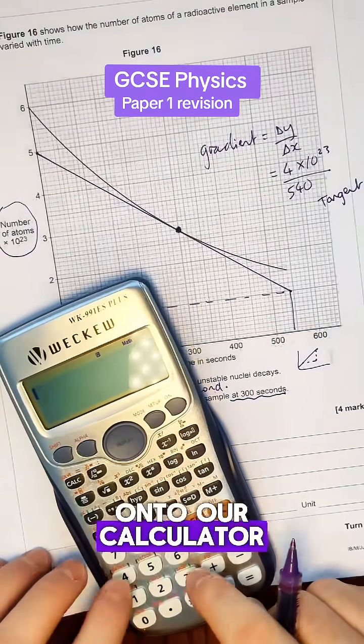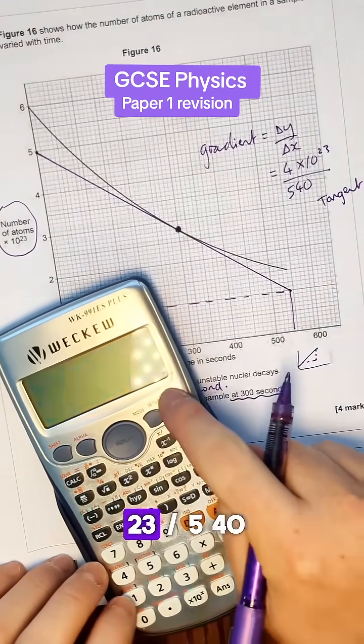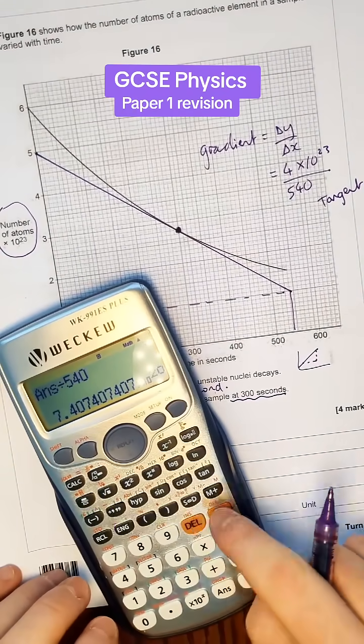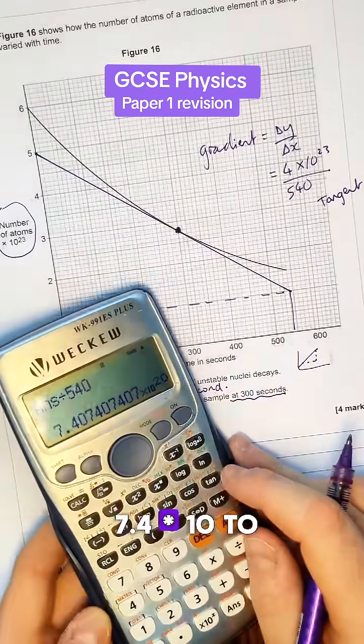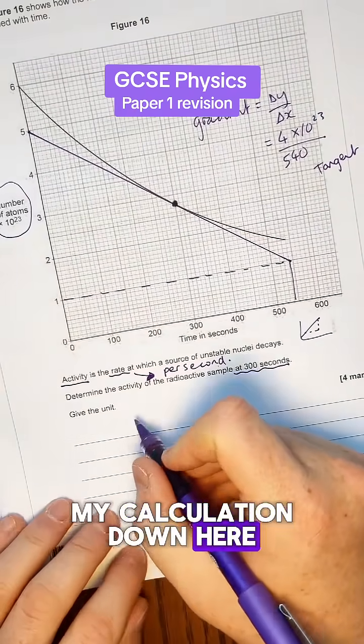So we put that onto our calculator and we have four times 10 to the 23 divided by 540 and that gives us 7.4 times 10 to the power of 20. So I'm going to put my calculation down here.